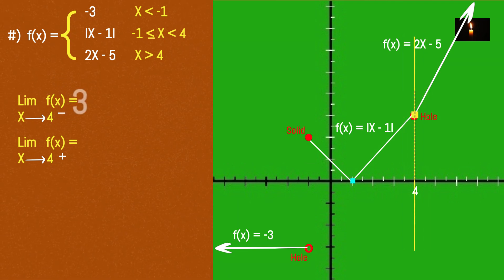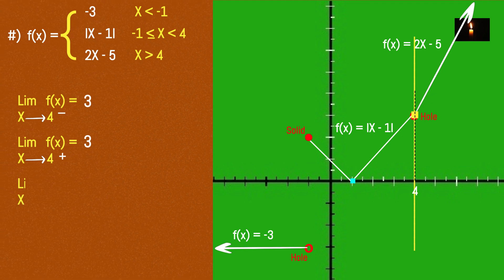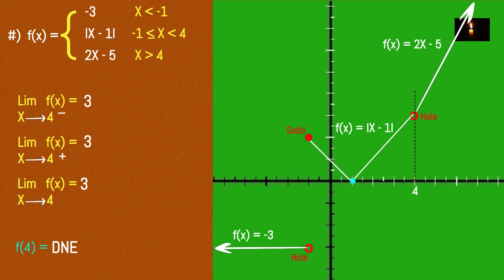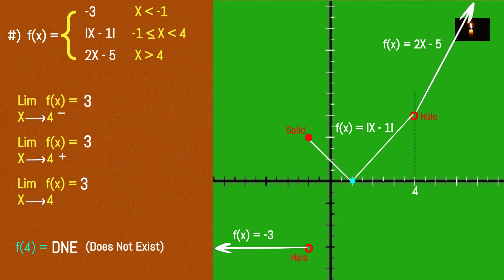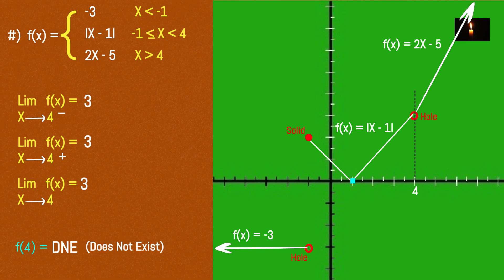Approaching from the left gives value 3, and approaching from the right also gives 3. So the limit exists and equals 3. But in the domain, at x = 4, the function value — checking whether the function machine equals the limit value.